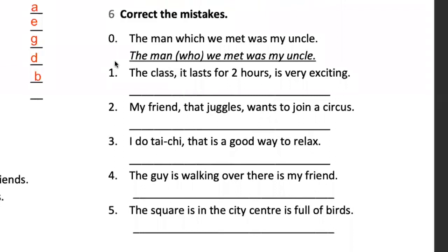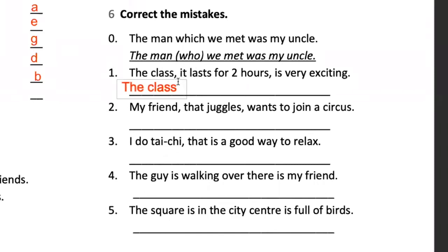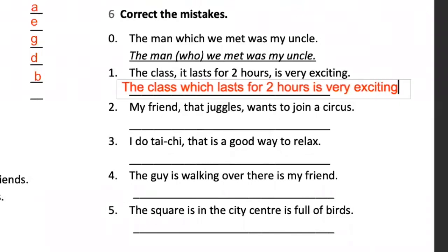Please correct the mistakes from number one to number five, starting with the first sentence as an example. Read it: 'The man which we met was my uncle.' Corrected: 'The man who we met was my uncle.' Number one: 'The class, it lasts for two hours, is very exciting.' Corrected to: 'The class which lasts for two hours is very exciting.'